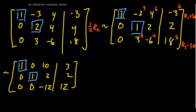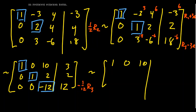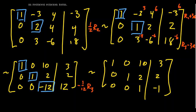We move to the next column and look for a non-zero entry in rows without pivots. The next pivot position is (3,3), currently containing -12. I would love a one there — dividing row three by -12, everything divides cleanly with no fractions. -12 divided by -12 is 1, and 12 divided by -12 is -1. So row three becomes 0, 0, 1, -1. Now we need to eliminate the 10 in row one and the 2 in row two using row replacement.